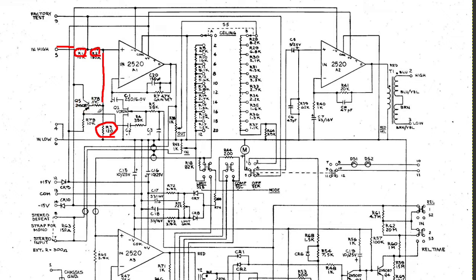The PNP transistor here is basically acting as a voltage buffer — it's an emitter follower. What it's doing is taking some of the input signal and adding that signal to the control signal coming out of the side chain of the compressor to the gate of the JFET. So the JFET here is the gain control element, and I think they're doing this in order to try to linearize the response of the JFET a little bit.